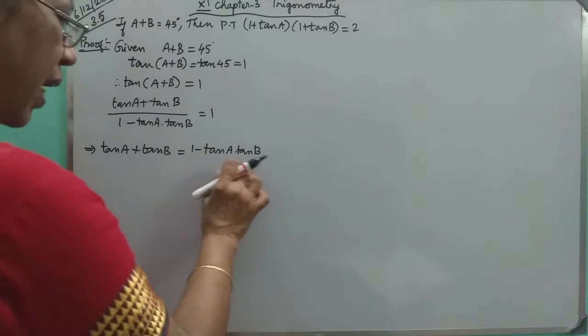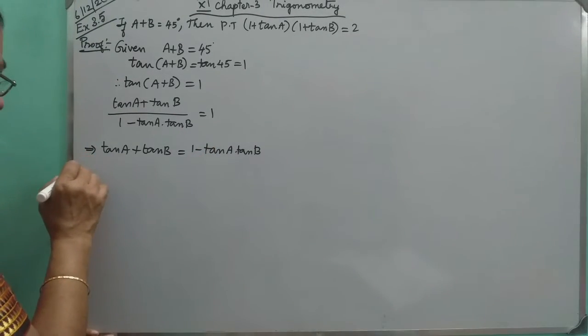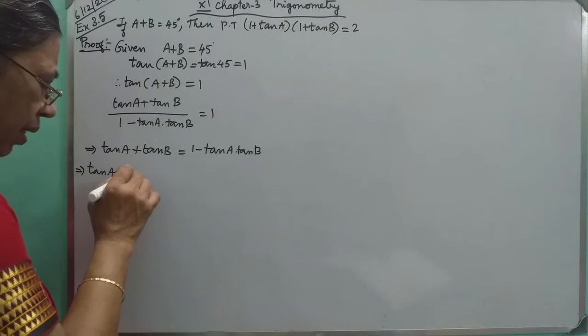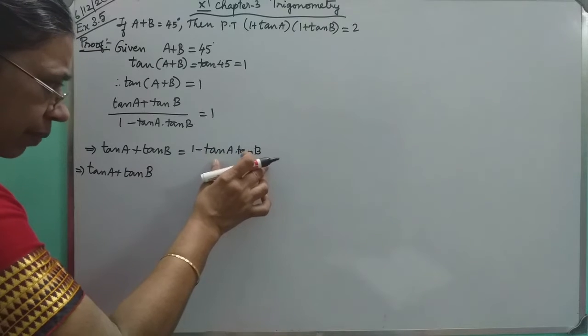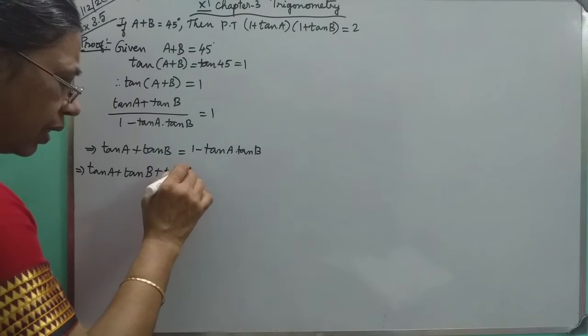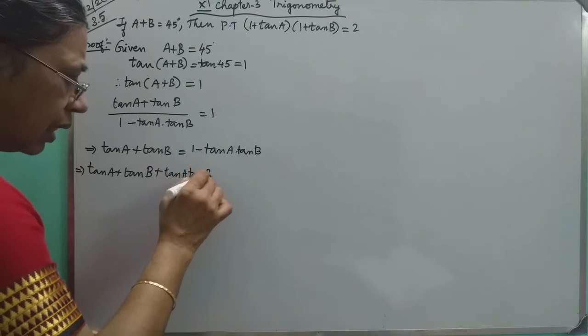Now, let us bring this tan A to this side. So we will be getting tan A plus tan B. If this minus term is transferred to this side, we will get plus tan A tan B is equal to 1.